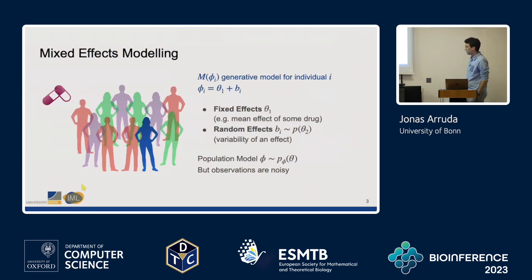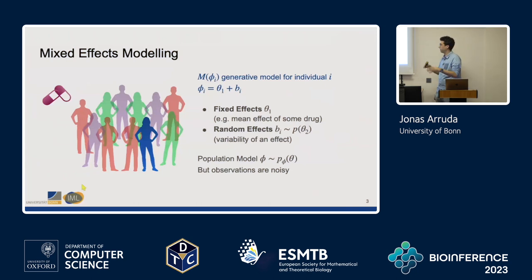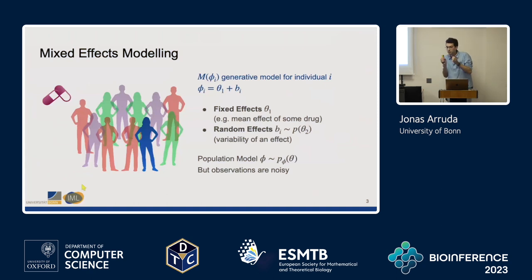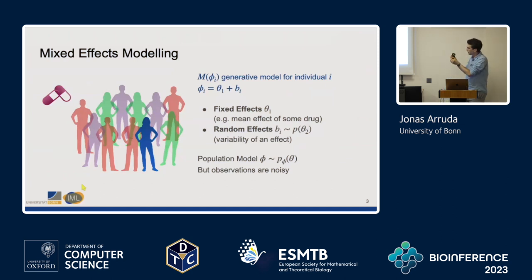The idea is to capture so-called fixed and random effects, where a fixed effect could be, for example, the mean effect of a drug on a whole population, and a random effect describes what's the difference of the single individual to the other individuals in the population. So we're really trying to capture the intrinsic variability in the different individuals.